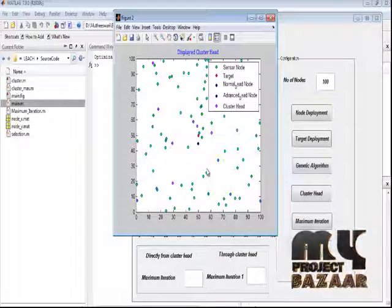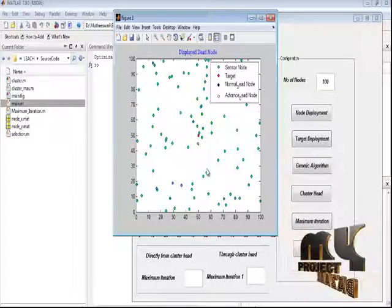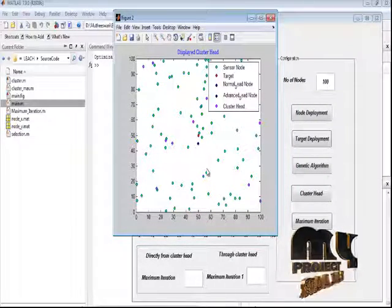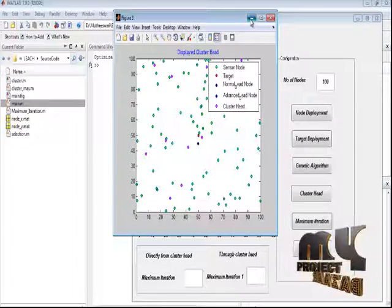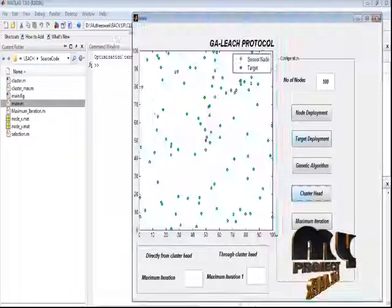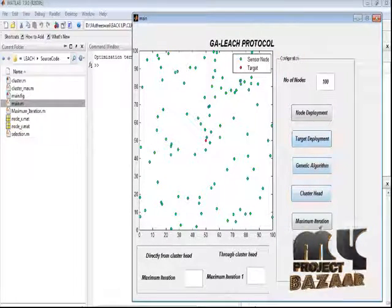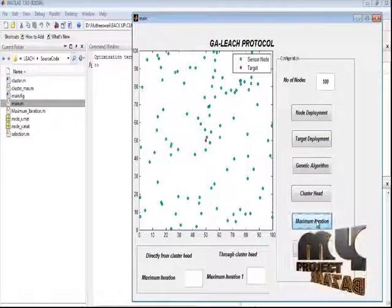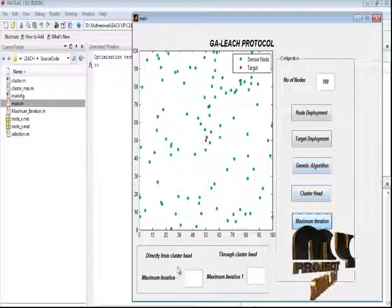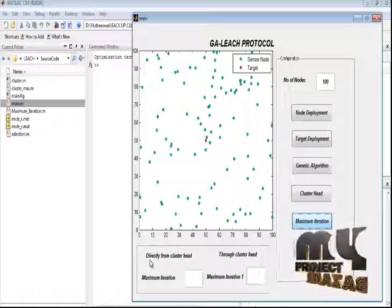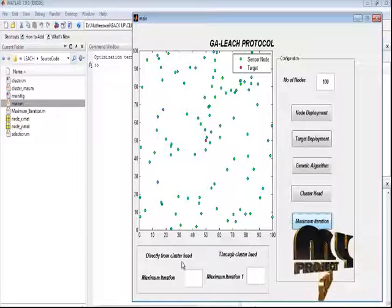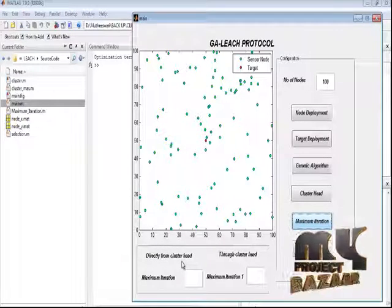Ignore the dead node and we process only with the available alive nodes. After completion of cluster head processes and dead node identification, we analyze the maximum iteration level.